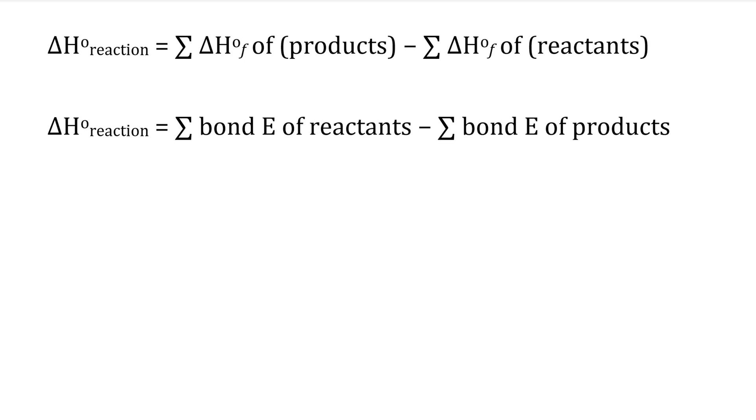One is that delta H equals the standard enthalpy of formation of products minus reactants, and another is delta H equals the bond energy of reactants minus products. So which is it, product minus reactant or reactant minus product?